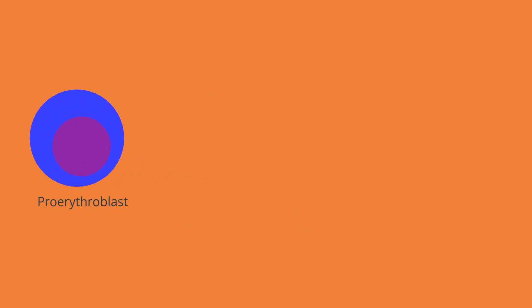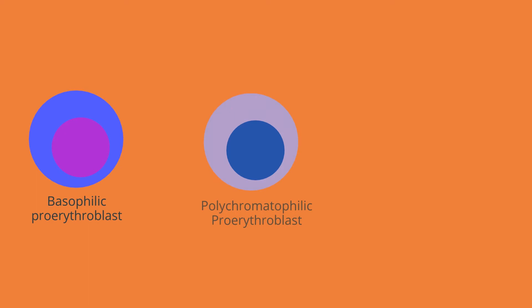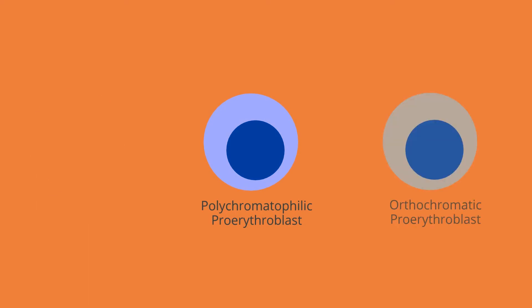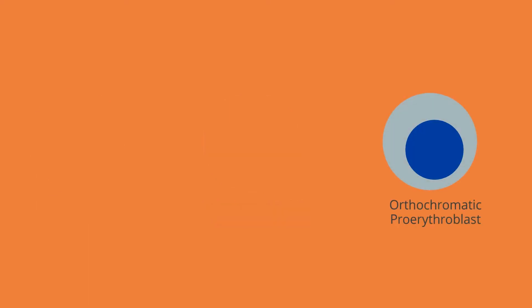The proerythroblast differentiates into basophilic, polychromatophilic, and then orthochromatic erythroblast stages. At this stage, the nucleus is expelled and the cell becomes a reticulocyte.